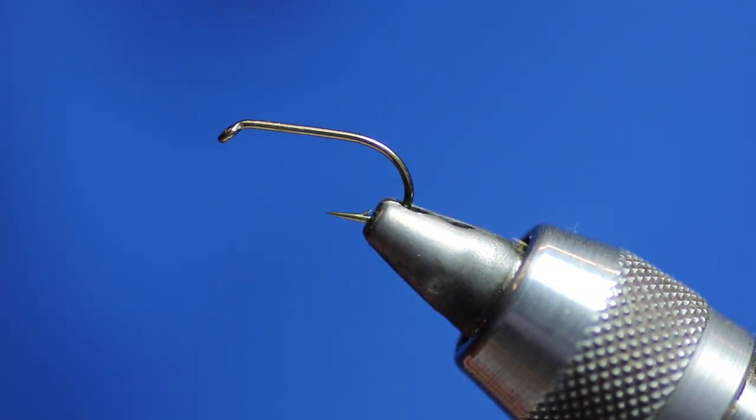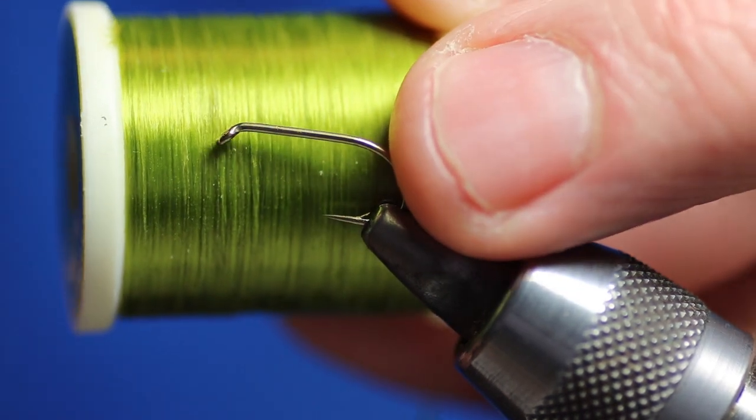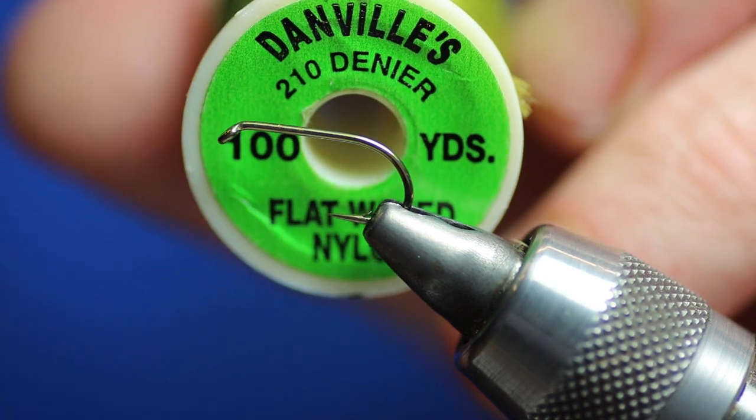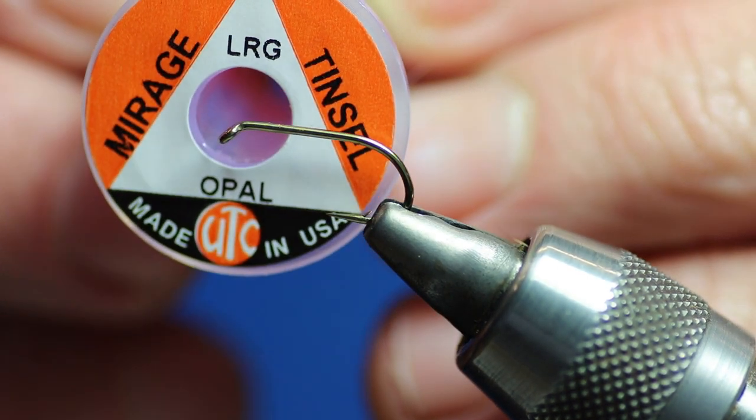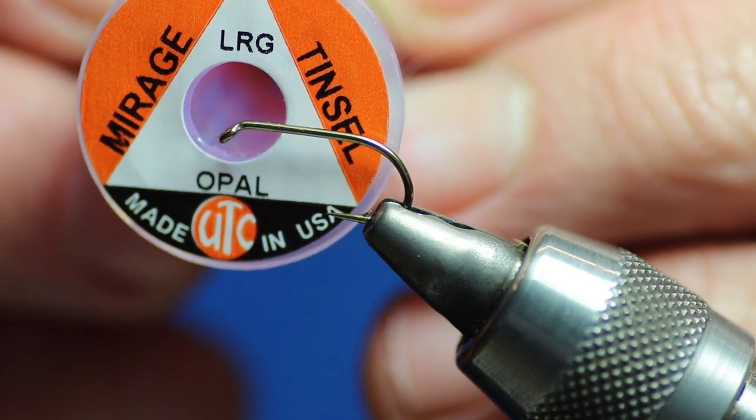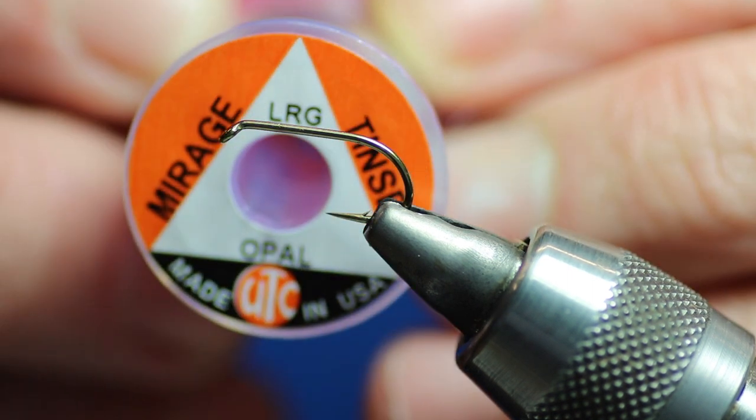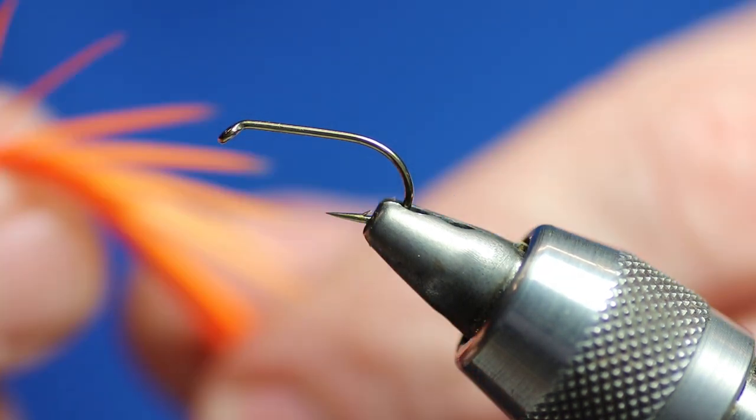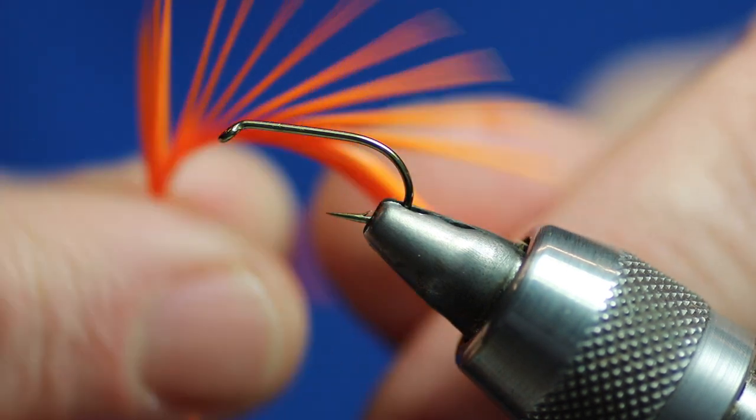We're going to use some thread here, so it's a different shade of olive to the main thread but it's also a 210 so it's quite a thick one. But I'm using it almost like a floss. And then I'm going to use some large UTC Mirage Opal. So you can do it with a UV one but I'm going to do it with that one. Then I'm going to use some Sunburst Orange Goose Biots.